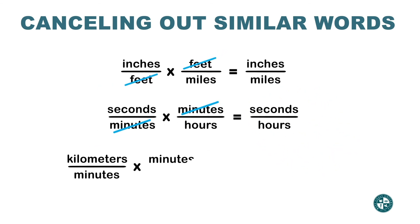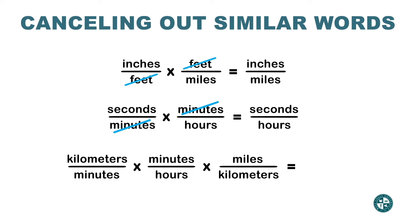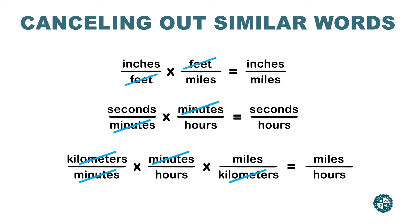Let's do one more — a little bit longer — because you can do this technique with any number of rates when you're multiplying them. Let's simplify this multiplication of three rates. Kilometers can be crossed out with the other kilometers. Minutes on the top and minutes on the bottom can also be crossed out. Check what is left on the top and bottom, and write the answer: miles over hours.